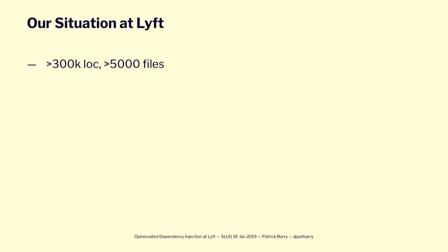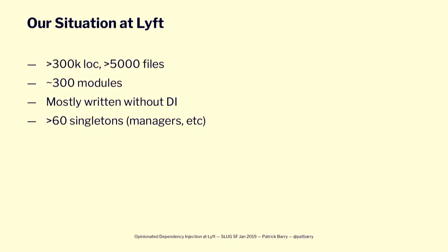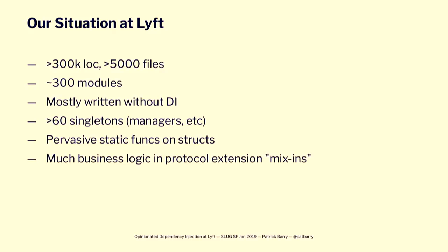Our situation: we're dealing with a very large code base — more than 300,000 lines of code, more than 5,000 files. It's also a very modular code base, broken up into about 300 modules at the moment and more every day. And it was mostly written without DI — there are more than 60 or so singletons, managers, and whatnot. There's also a pervasive use of static functions on structs, which is basically a singleton. Much of our business logic is in protocol extensions used like mixins, and those don't have initializers either.